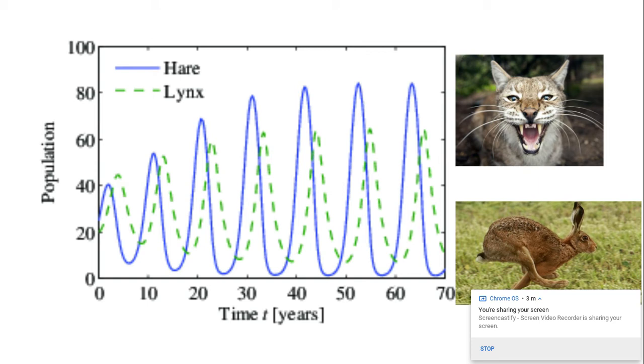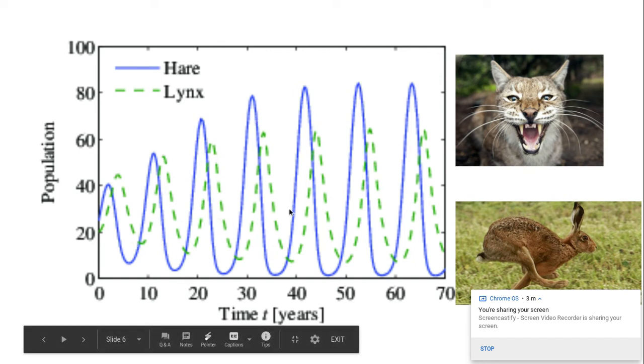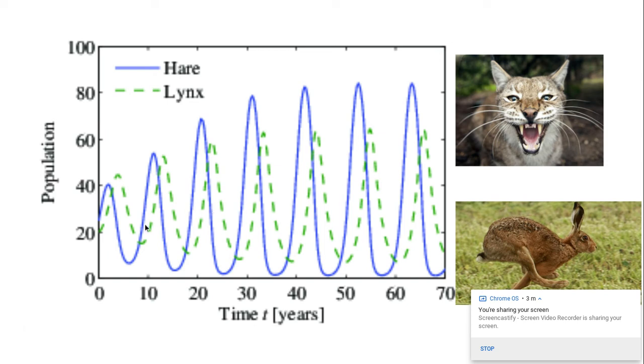And because the hare population is decreasing, so the birth rate is less than the death rate. Because the population size is decreasing, the lynx has less food to eat, so therefore the lynx population will be decreasing again because the birth rate is less than the death rate. And it fluctuates, so predator-prey interaction population graphs fluctuate all to do with the availability of the food.